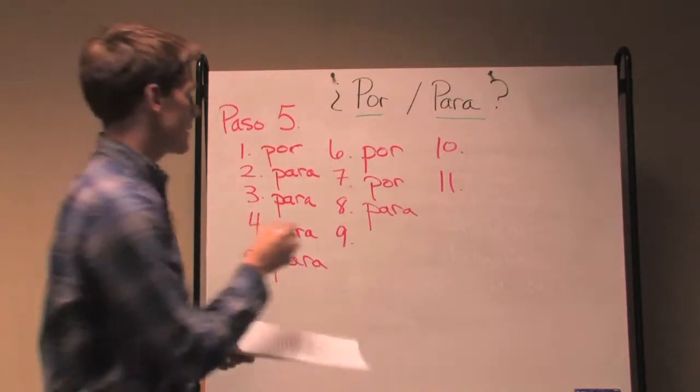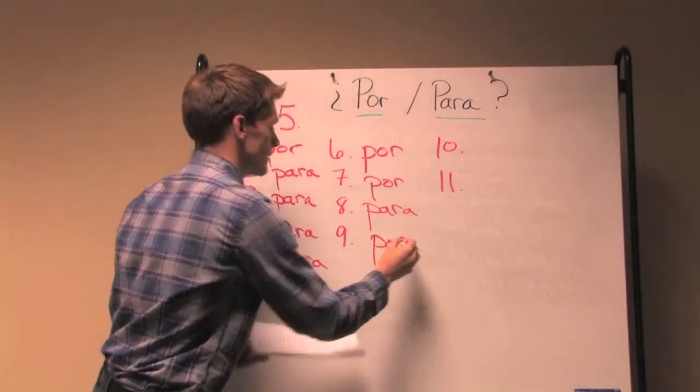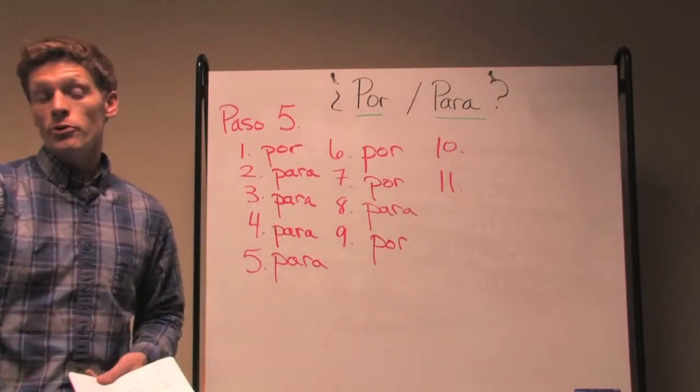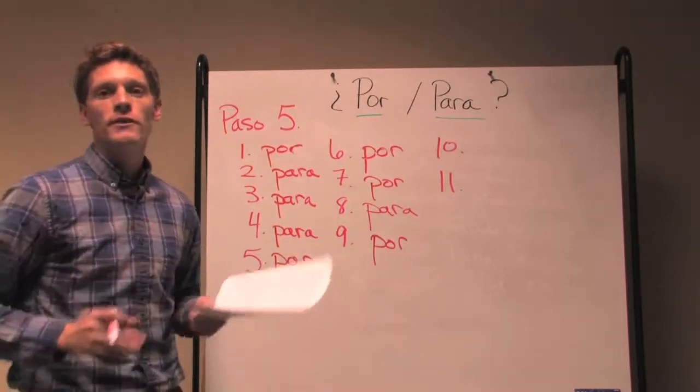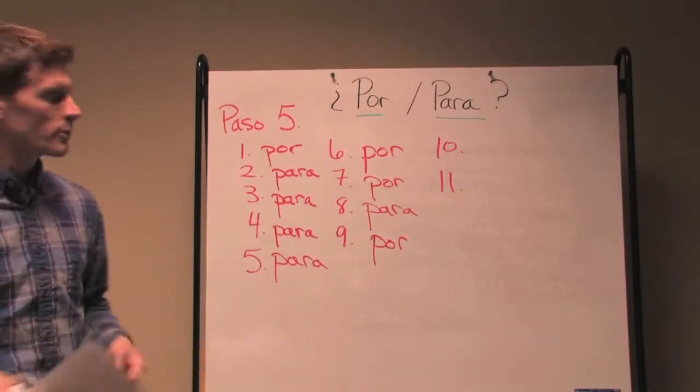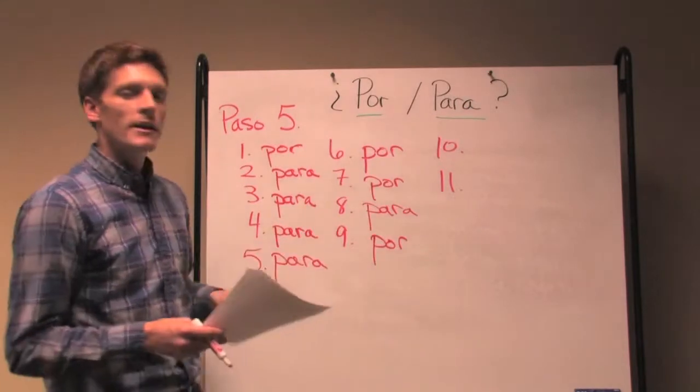Vamos a pasar, number nine, por la planta de ropa. So this is where you're going to walk through or walk by or walk around. So this is that lugar ambiguo, cruzado, frecuentado, someplace that you're frequenting, some ambiguous place.